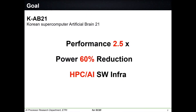The design goal of AB21, the Korean supercomputer processor named Artificial Brain 21, includes performance, power, and application software infrastructure. KEAB21 is, as far as we know, the first CPU designed under the support of the Korean government as a supercomputer CPU.